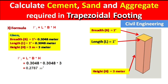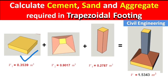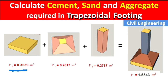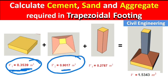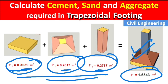We have now calculated the volumes of all three parts. Adding them together to get the total volume of the trapezoidal footing: V1 = 0.3539 m³, V2 = 0.9017 m³, V3 = 0.2787 m³. Total volume V = 1.5343 m³.